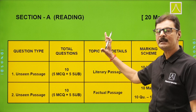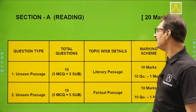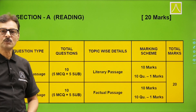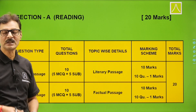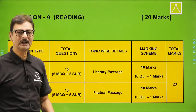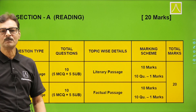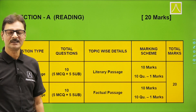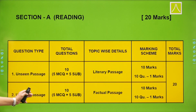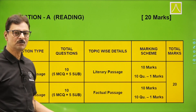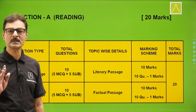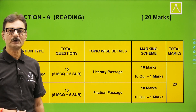Now, what changes have happened in Section A — the reading section of 20 marks? Earlier, the first passage was 12 marks and the second was 10 marks, totaling 22 marks. In the updated pattern, the first unseen passage will be 10 marks with 10 questions — 5 MCQ and 5 subjective. The second unseen passage will also have 10 questions — 5 MCQ and 5 subjective. So instead of a 22-mark reading section, you now have a reading section of 20 marks.